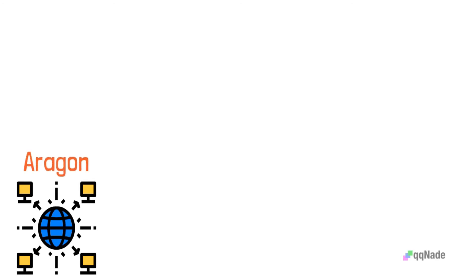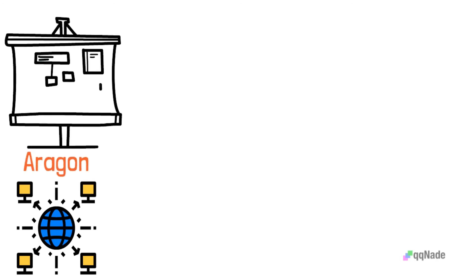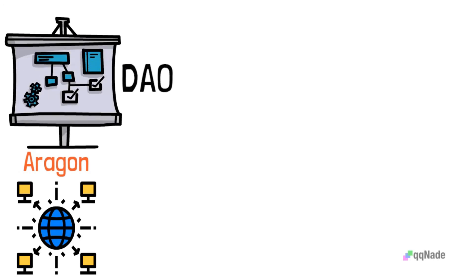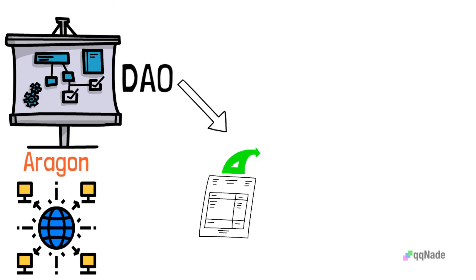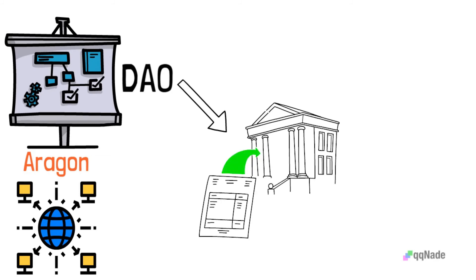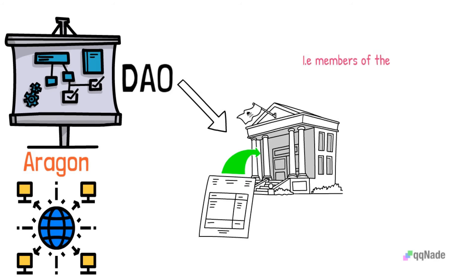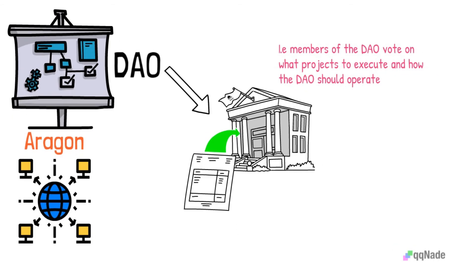Another noteworthy decentralized app is Aragon. Aragon is a project that aims to make the creation and management of DAOs possible. A DAO is a decentralized autonomous organization — the equivalent of a regular organization but with a decentralized governance system. Members of the DAO vote on what projects to execute and how the DAO should operate.